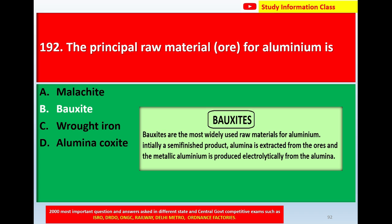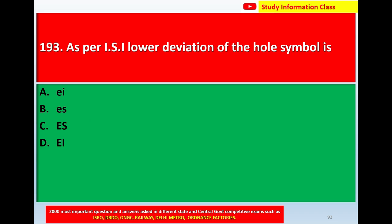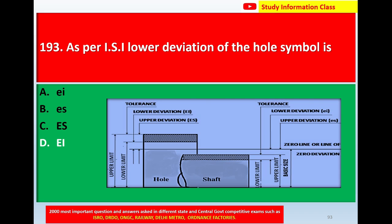Question number 192: the principal raw material for aluminium is option B, bauxite. Next, question number 193: as per ISI, the lower deviation of the hole symbol is. Option A: small letter EI. Option B: small letter ES. Option C: capital letter ES. Option D: EI. The correct answer is option D, EI.